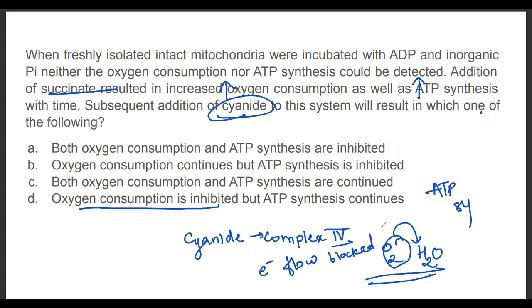If O2 is not being consumed, if the block is only at complex 4, how will the ATP synthase work? We know that ETC is coupled with oxidative phosphorylation. If your ETC is not working, how will ATP synthesis occur? Therefore, in this case, there is no ATP synthesis and no oxygen consumption. So our correct option should be option A.